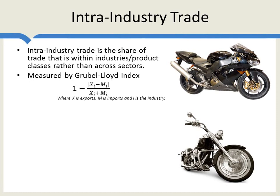Let's show how the Grubel-Lloyd Index works. The formula is: one minus the absolute value of exports minus imports, divided by the sum of exports and imports. For example, suppose a country exports a good but does not import it — imports are zero. The numerator becomes one and one minus one is zero, so intra-industry trade would be zero. In other words, if we export a good but don't import it, the Grubel-Lloyd Index will be zero.